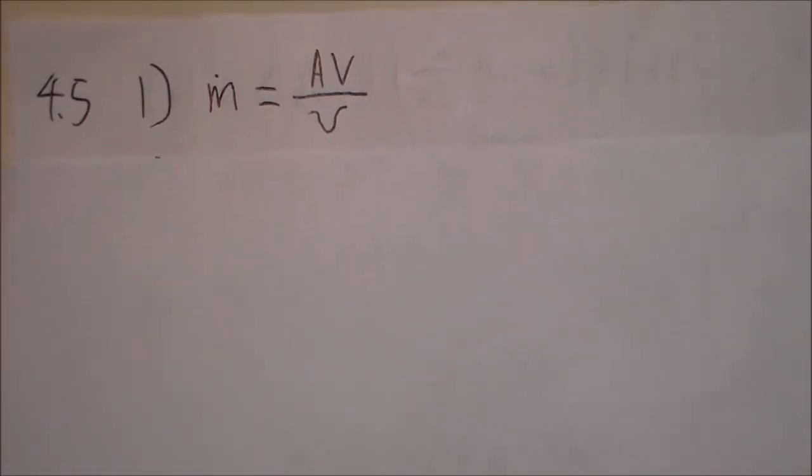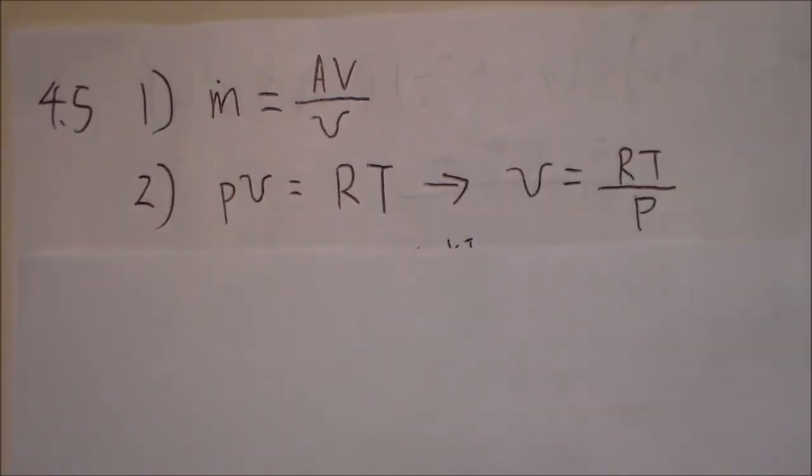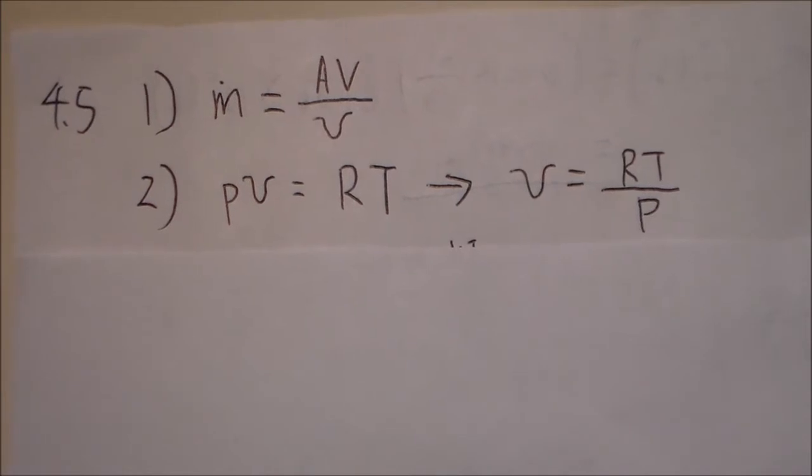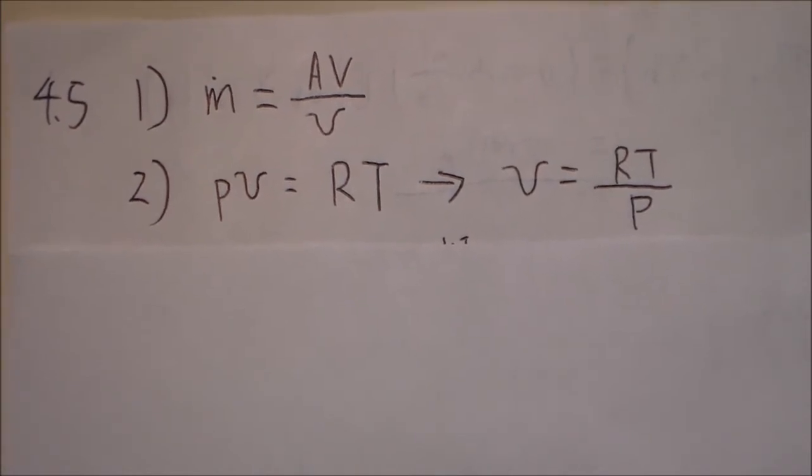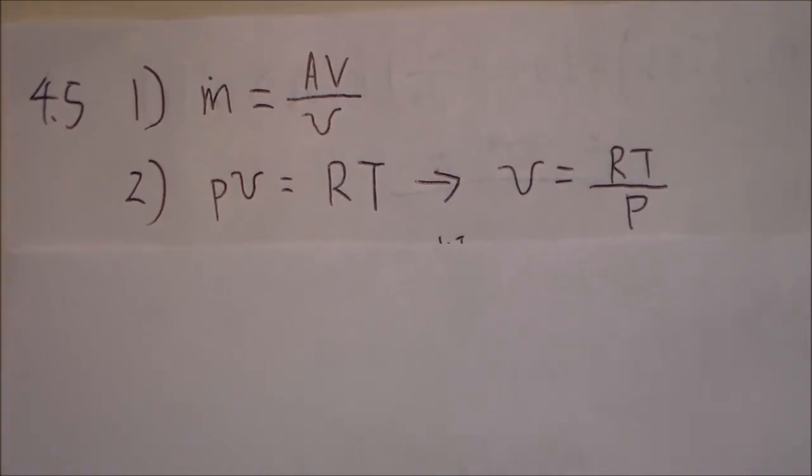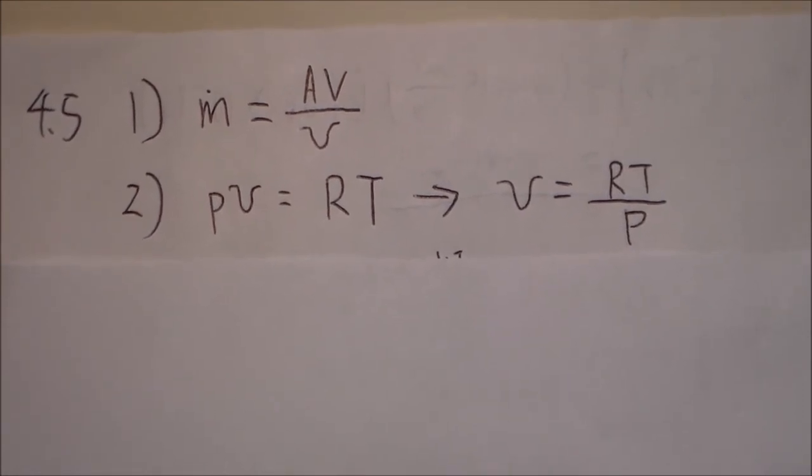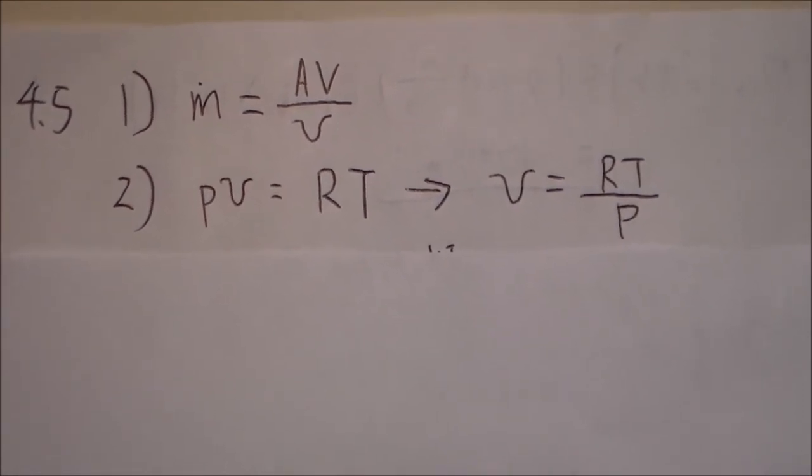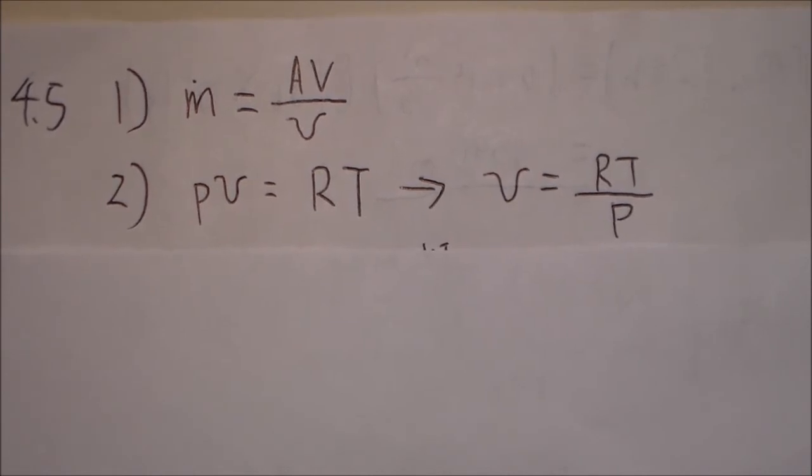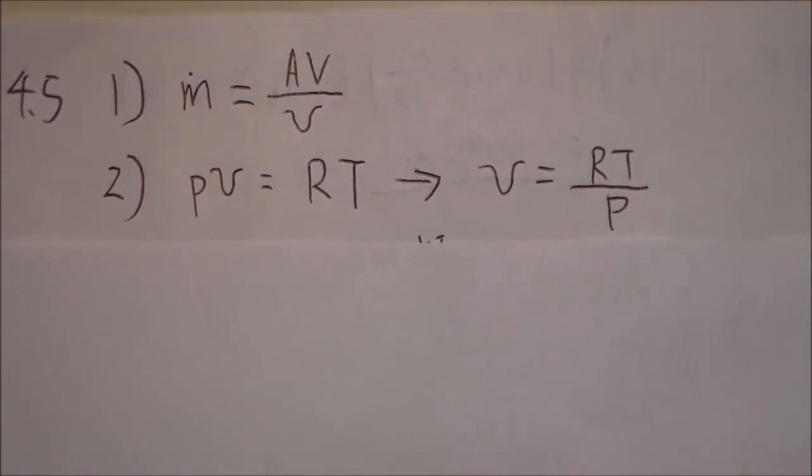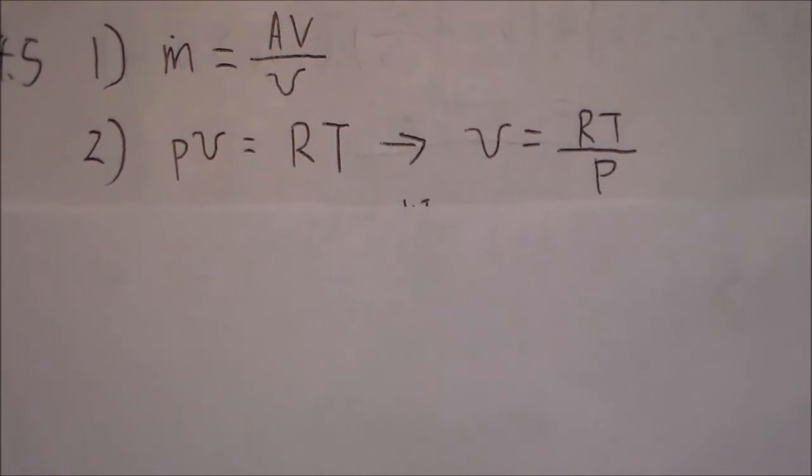The mass flow rate is equal to the volumetric flow rate divided by the specific volume. We are told in the question that we can use ideal gas behavior, so P times specific volume is equal to R times T, where R is the universal gas constant divided by the molar mass.